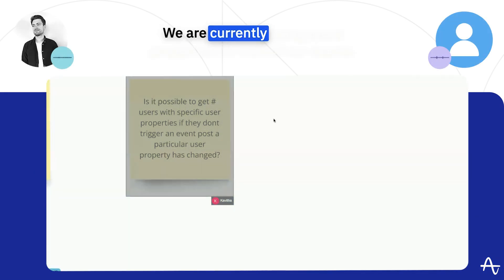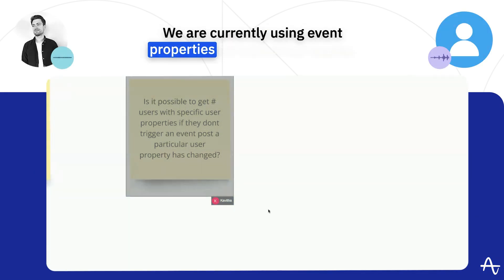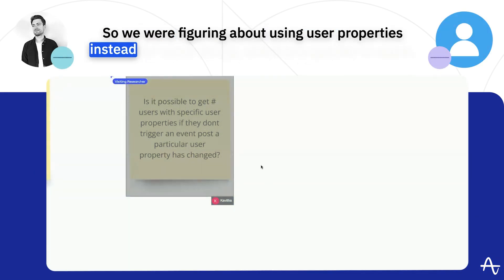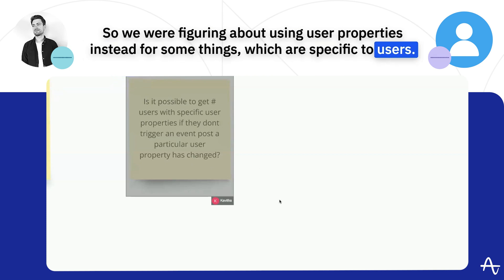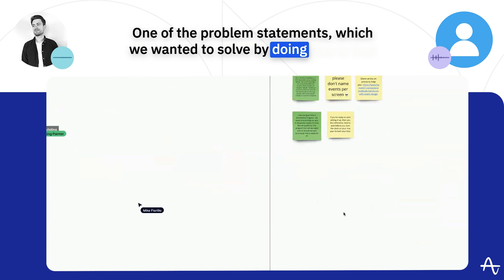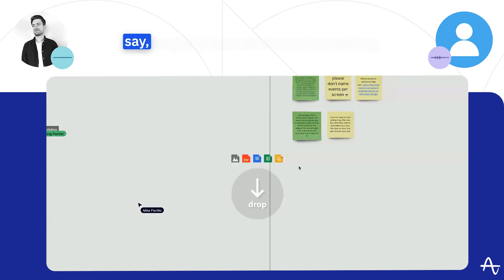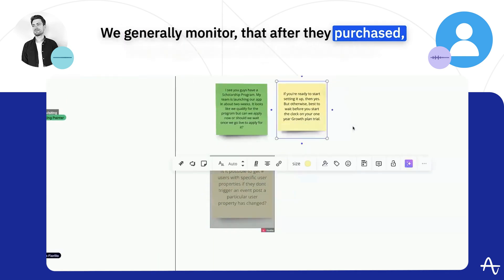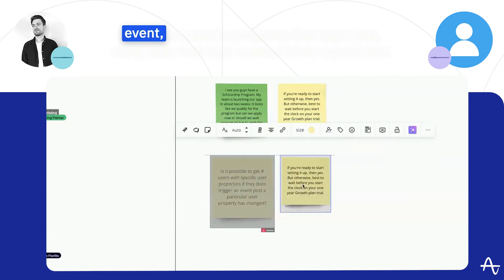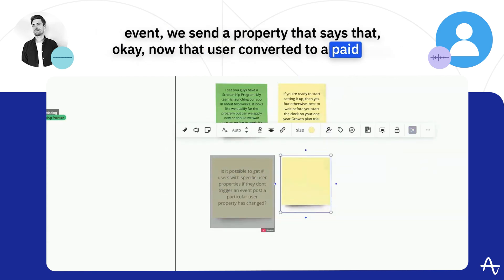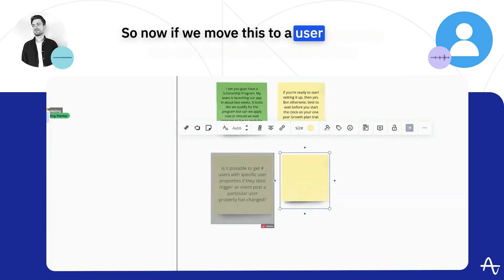We are currently using event properties for a lot of our events and we were figuring about using user properties instead for some things which are specific to users. One of the problem statements we wanted to solve is that when a user purchased something, we generally monitor that after they purchased they triggered an event, and during that event we send a property saying that the user converted to a paid user. So if we move this to a user property, can we also monitor cases where they don't trigger any future events?